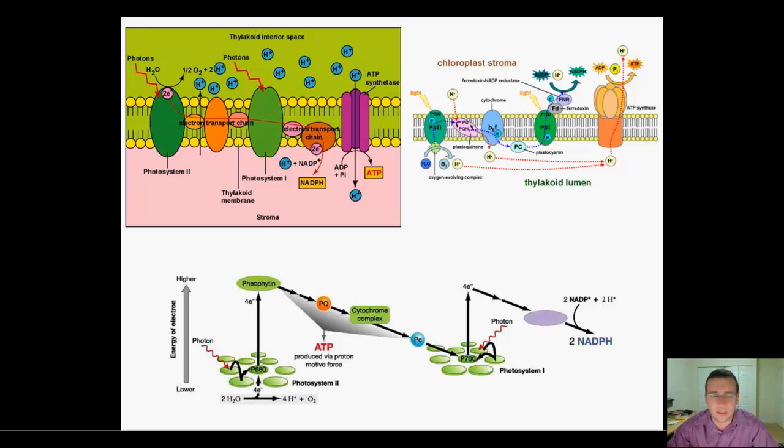In the reaction we talked about in video three, we have the non-cyclic version where electrons start from water to replace the electrons lost by photosystem 2 during oxidation by light. These electrons are going to go uphill,